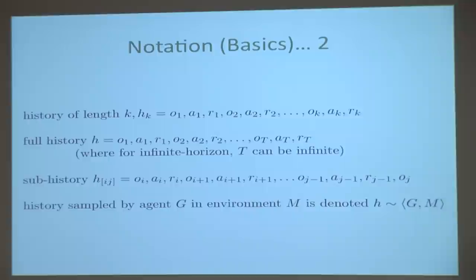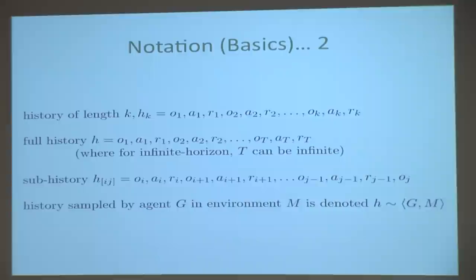We'll talk about history sampled from an interaction between an agent and an environment as H sampled from the interaction. Why is history random? Because the agent could be acting randomly, because transitions in the state happen randomly, and rewards can be generated randomly. So there's all kinds of randomness that generates these things.